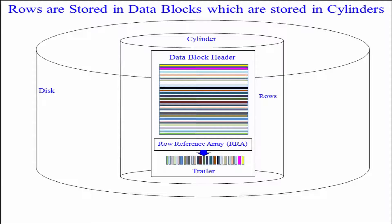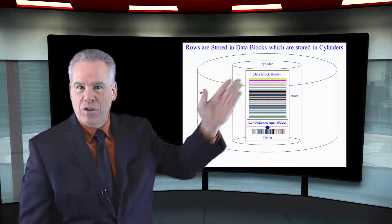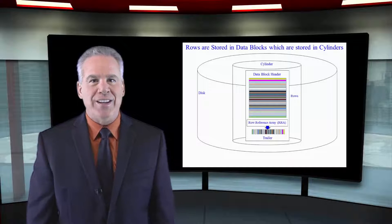Go to the row reference array. Boom. Here's the starting position of row one. Starting position of row two. That's what I need you to see right now.